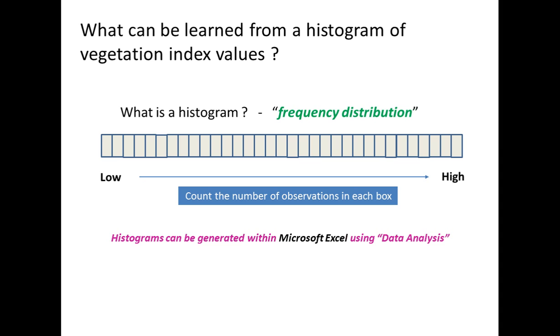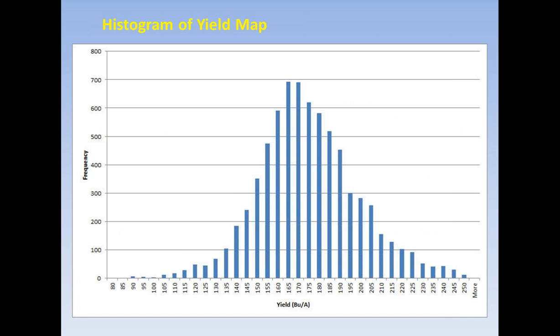This is an example of a histogram now for yield. So this was a yield map that was submitted to Excel and a histogram was generated. You'll notice it's bell-shaped. This is in bushels per acre, but at the low end, we have yields that are in the neighborhood of 100 bushels,